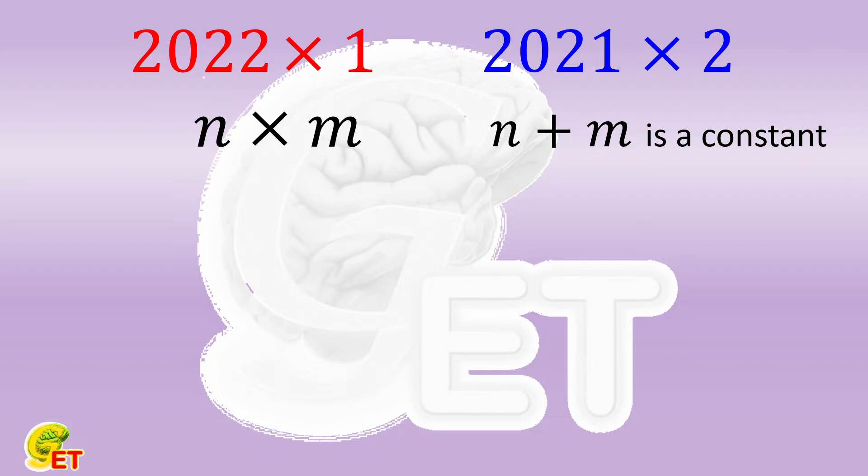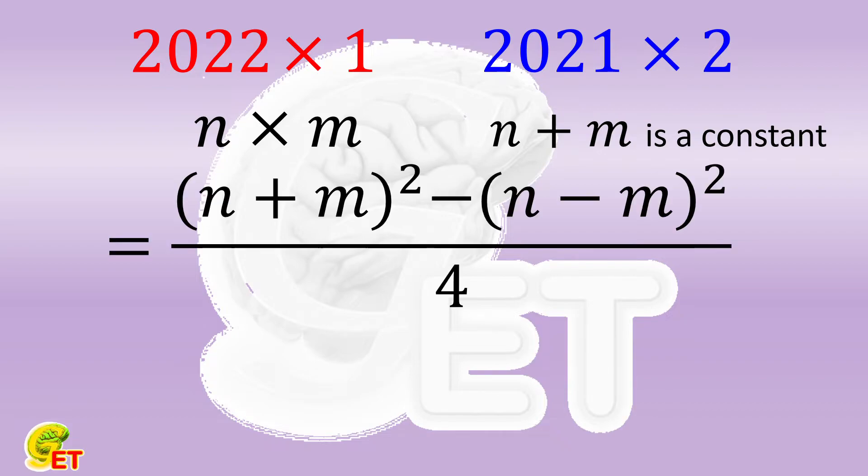What is n times m equal to? It is equal to the square of their summation minus the square of their difference, all divided by 4.